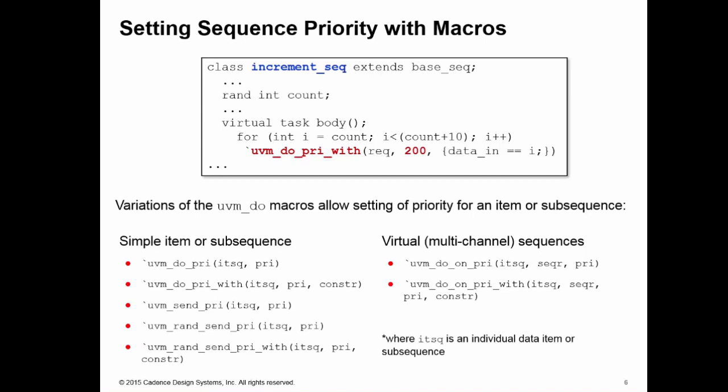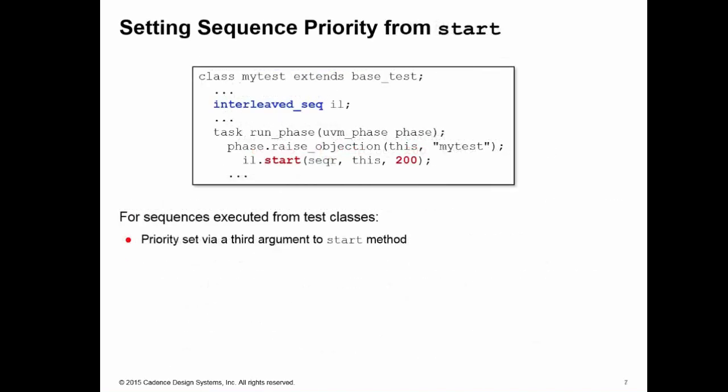Finally, we can set the priority of a sequence if we're executing it from the test class using a start method. There's a third argument to that start method which allows you to specify the priority of the sequence or the items generated by that start call. Those are the three methods of setting priority.